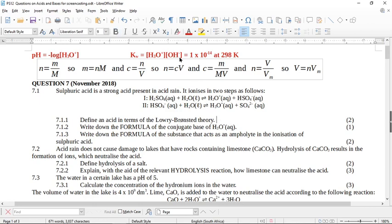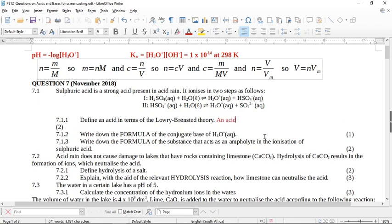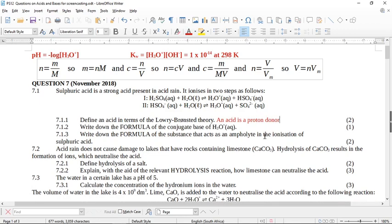Define an acid in terms of the Lowry-Bronsted theory. An acid is a proton donor. Write down the formula of the conjugate base of H3O+. Now remember, to find the conjugate base, you have to take a proton off. So you end up with H2O. So the conjugate base of the hydronium ion is in actual fact water.